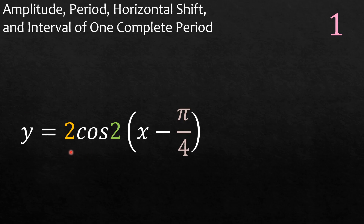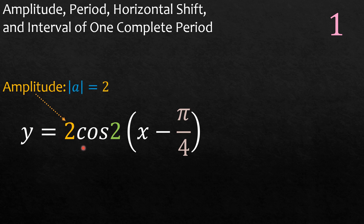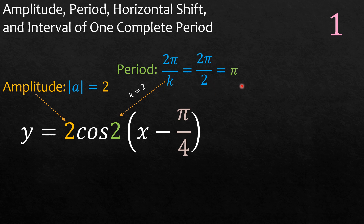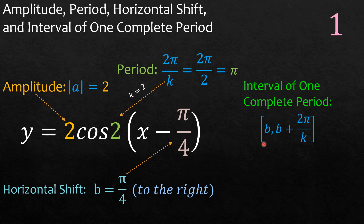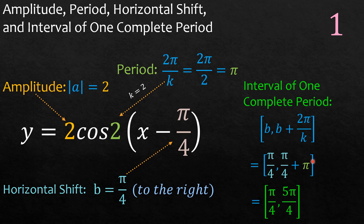Example: y is equal to 2 cosine 2 times x minus pi over 4. The amplitude is 2 — the absolute value of a is 2 units. The period is equal to 2 pi over k, where k is 2, so 2 pi over 2 is pi. The horizontal shift: we see this is negative, so b is equal to pi over 4 and that is positive, so we shift the graph to the right. The interval of one complete period is b to b plus 2 pi over k: pi over 4 plus pi gives 5 pi over 4, so the interval is from pi over 4 to 5 pi over 4.